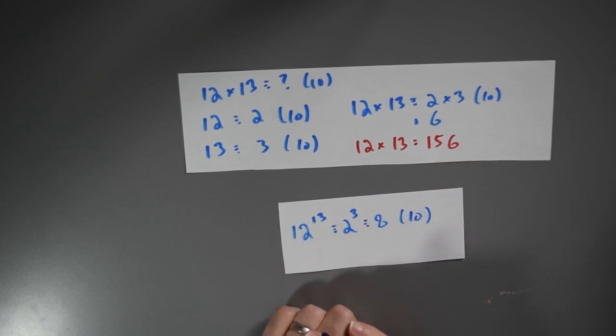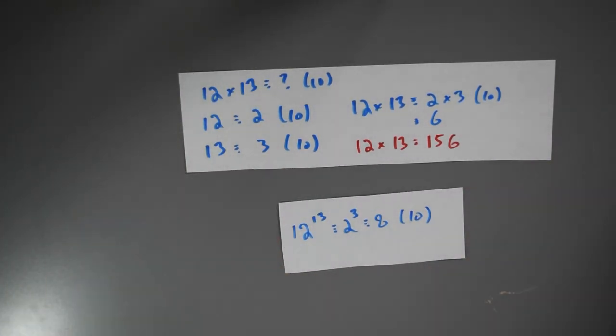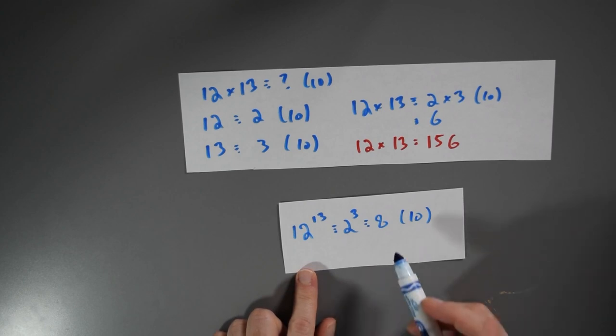So if we can just replace equal things for equal things or equivalent things for equivalent things, then 12 to the 13th should be 8 modulo 10. You might be worried at this point, so we'll try that again.